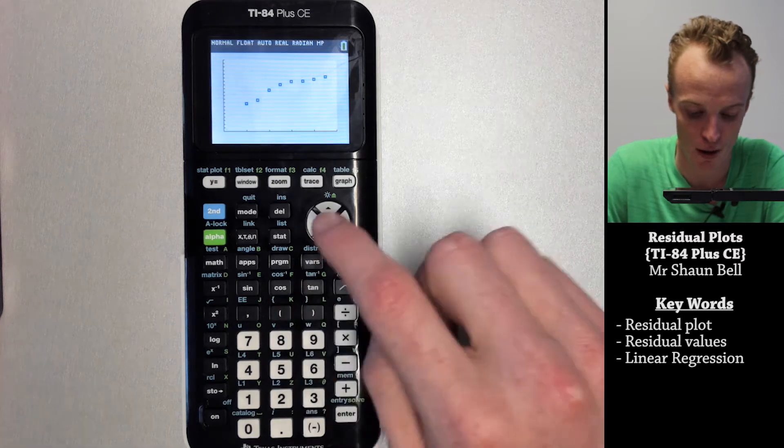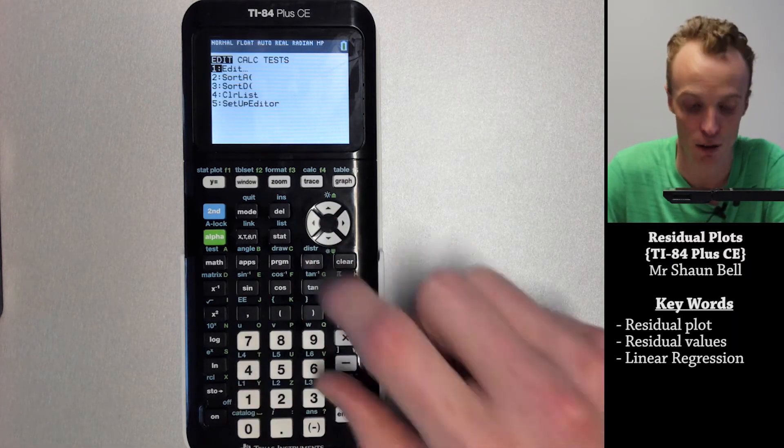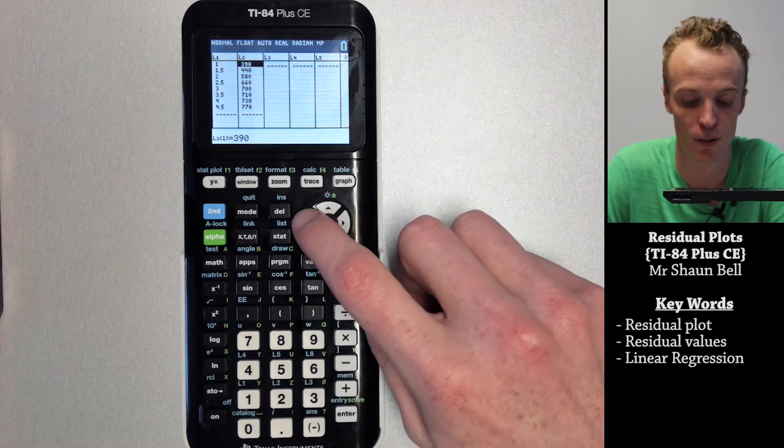I can have a look at those lists by hitting the stat button and going to edit, and I can see my two lists in here.